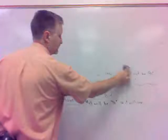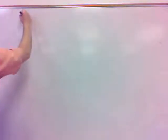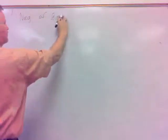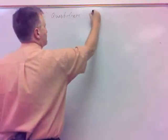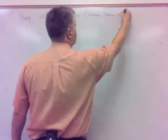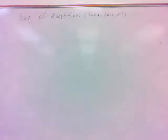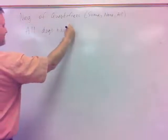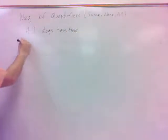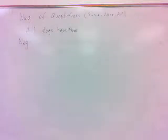Negations of quantifiers is what I want to mention next. Words like some, none, and all — those are the three we'll mainly hit here, negating those. For example, if I said 'all dogs have fleas,' what would you say the negation of that would be? What would the negation of that be? All dogs have fleas.